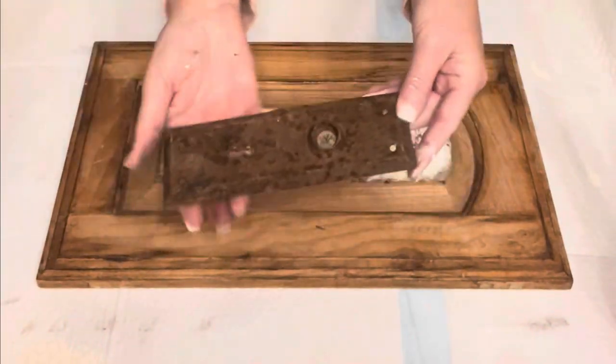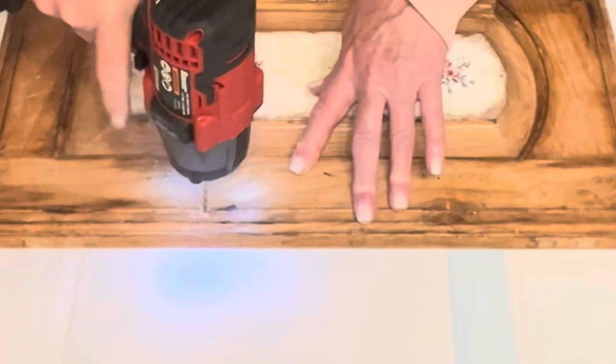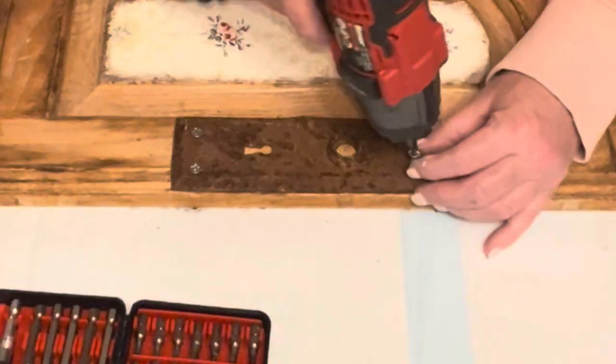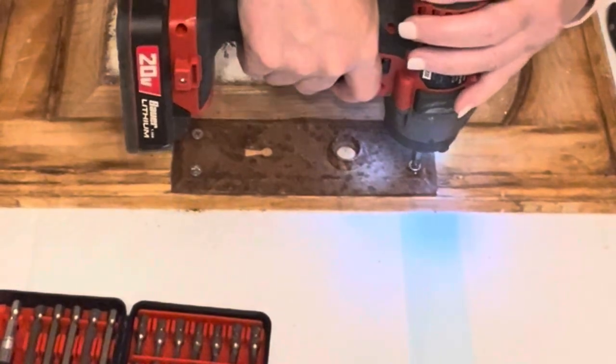Then I've got this old door plate. This one is nice and rusty, just how I liked it. I laid it down, made marks for my holes, and went ahead and pre-drilled the four holes, and then I just screwed in some screws to hold that in place.